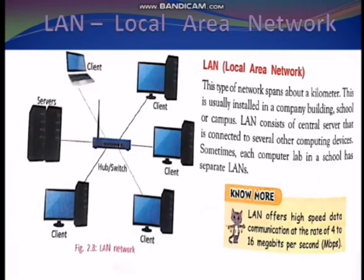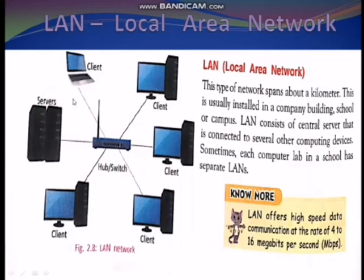Next is local area network — LAN. In the figure, all the client systems are connected here along with a hub and switch, and here we have the server. This covers about one kilometer. Within one kilometer we can have the network known as local area network. This is usually installed in a company building, school, or campus. It consists of a central server connected to several other computers using a hub. Each computer lab in a school has a separate LAN.